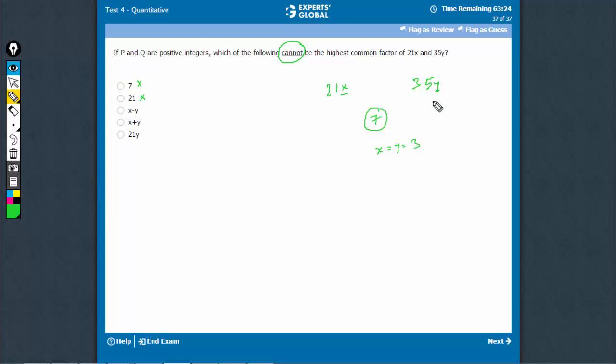x-y. When x-y happens to be a multiple of 7, this is possible. For example, x is equal to 12, y is equal to 5. In this case, the highest common factor is 7 only and 7 is also x-y. So this is possible.